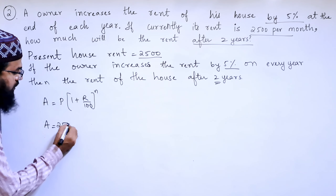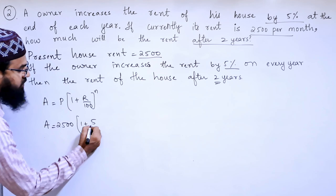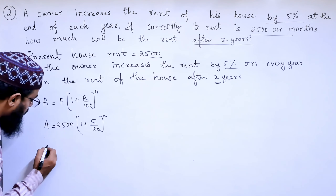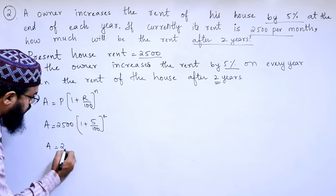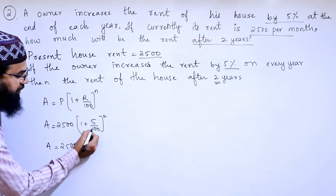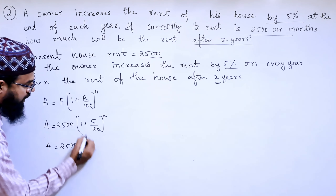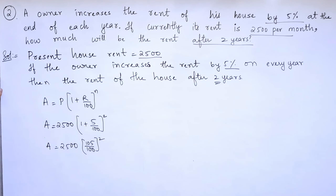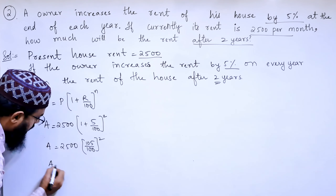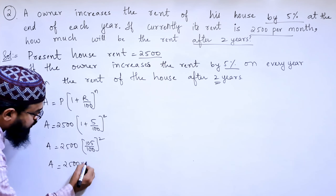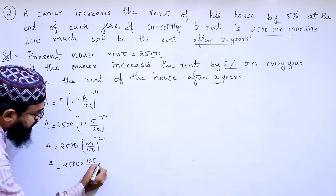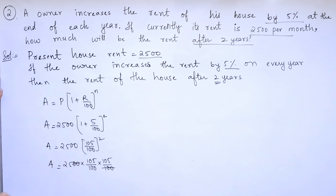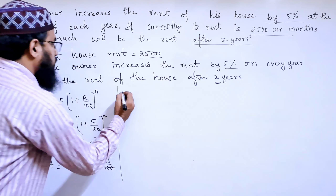n is the number of years, that is 2 years. So let us start the solution: A equals P which is 2,500, into (1 plus 5 by 100) whole to the power 2. So A equals 2,500 into (105 by 100) squared.